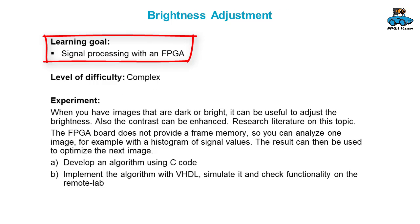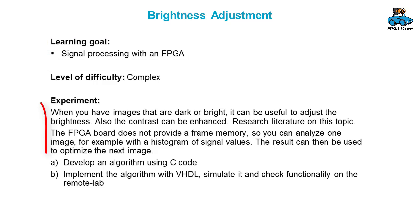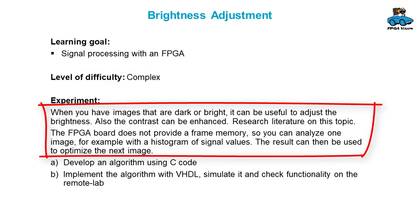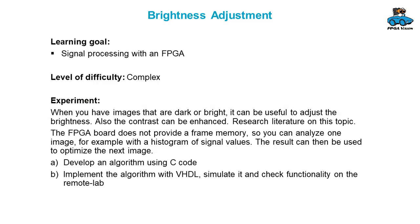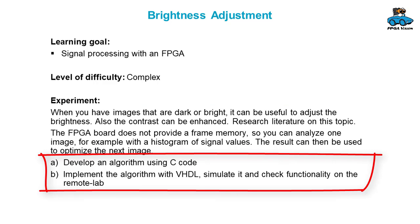A signal processing algorithm that is a little more complex is brightness adjustment. You might have images that are too dark or too bright and you want to adjust the brightness, or you could try to enhance the contrast — have a look at literature on this topic. Since we don't have a frame memory, we analyze one image and then use the result for the next image. The tasks are developing the algorithm using C code and then implementing it with VHDL on the FPGA.